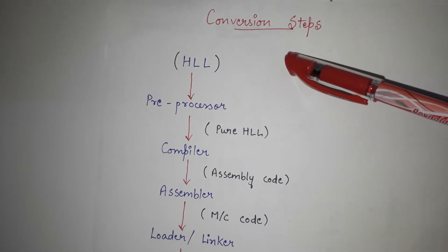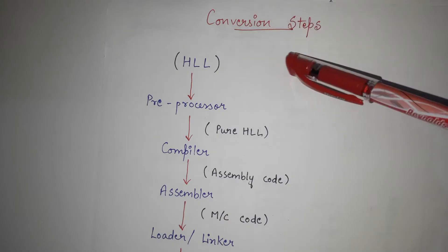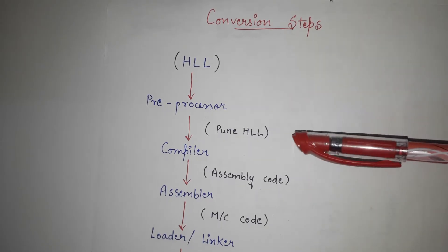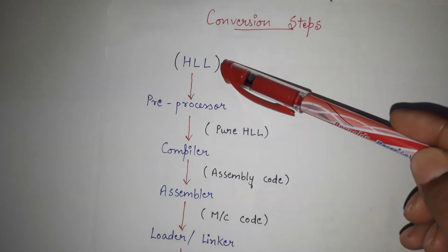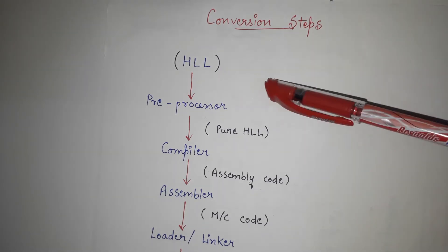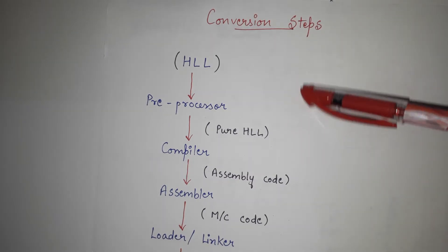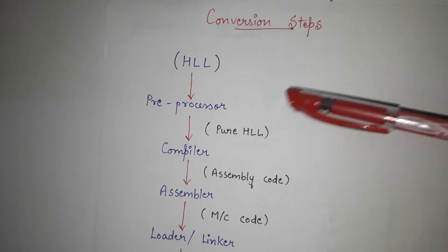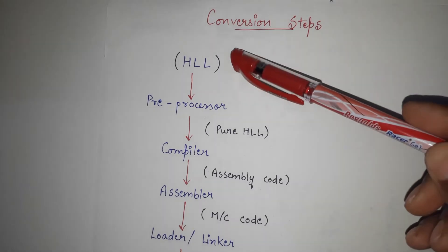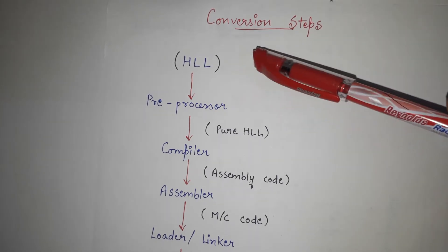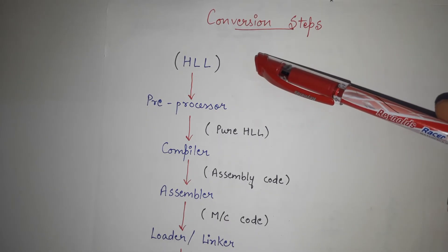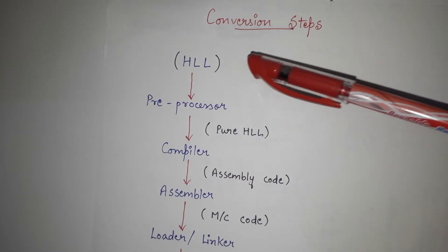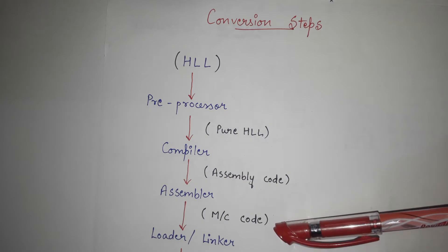The language we write programs in consists of words, sentences, and structure that we can understand. But the problem is computers — any machine or system — are not able to understand this high-level language directly. They are able to execute or understand a language known as low-level language. Low-level language means assembly code, or as we know, computers understand binary language — 0s and 1s. High-level language is something humans can read, but machines understand low-level language.